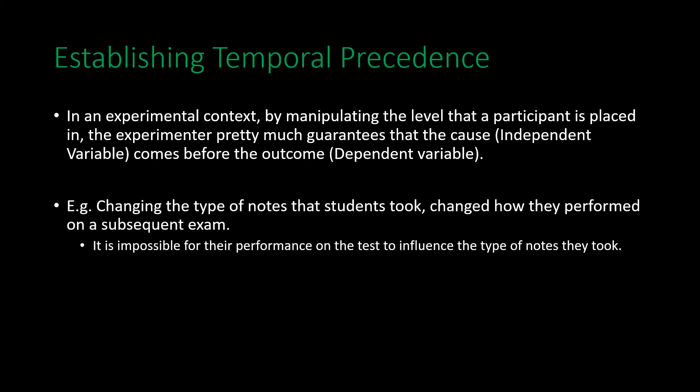An example is changing the type of notes that students took, which then changed how they performed on a subsequent exam. It would be impossible for their performance on a test to influence what type of notes they took beforehand — it could only be that they took notes first, which then led to differences in performance.